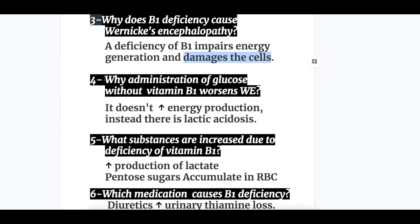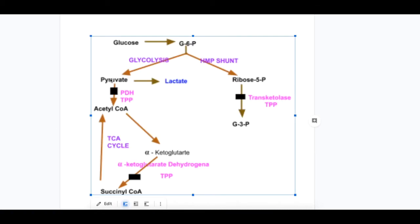Question number four: why does administration of glucose without vitamin B1 worsen Wernicke's Encephalopathy? Because sugar administration does not increase energy production. Instead, there is lactic acidosis — if pyruvate is not converted to acetyl-CoA to enter the TCA cycle, it is instead converted to lactate, causing lactic acidosis.